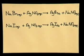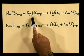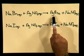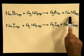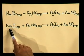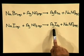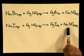Now let's write equations for the other two reactions, namely for the bromide and the iodide salts. Note carefully how the ions have swapped around in each of these reactions. Sodium bromide will react with silver nitrate to form a precipitate of silver bromide and an aqueous solution of sodium nitrate. In our second equation, sodium iodide will react with silver nitrate to form a precipitate of silver iodide and aqueous sodium nitrate.